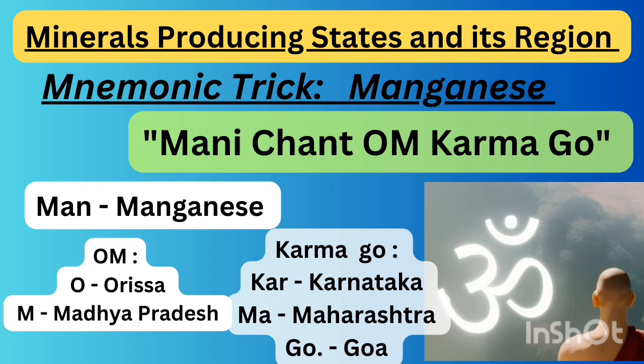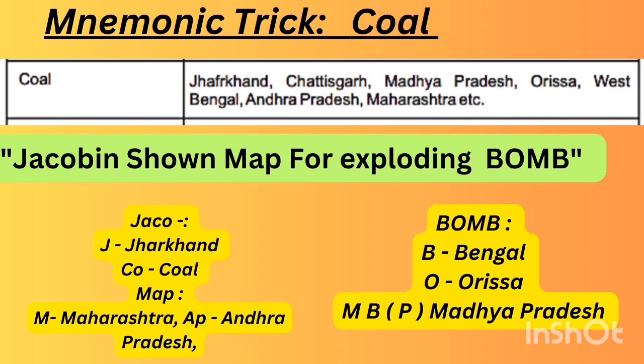Next is the mnemonic trick for coal producing states. The shortcut is: 'Jacobin shown map for exploding bomb.' In that, J stands for Jharkhand, co represents coal. In 'map' — M stands for Maharashtra, AP stands for Andhra Pradesh. In 'bomb' — B stands for Bengal, O stands for Orissa, MP stands for Madhya Pradesh.